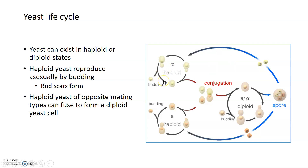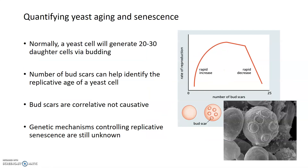What's important for aging yeast — or seeing how old they are in terms of how many times they've reproduced — is looking at bud scars, because every time budding happens, whether the organism is haploid or diploid, it leaves behind a trace or bud scar. A yeast cell will generate about 20 to 30 daughter cells in its lifespan, and the more bud scars present, the older that yeast cell is. The number of bud scars, visible in this electron micrograph, helps identify replicative age.